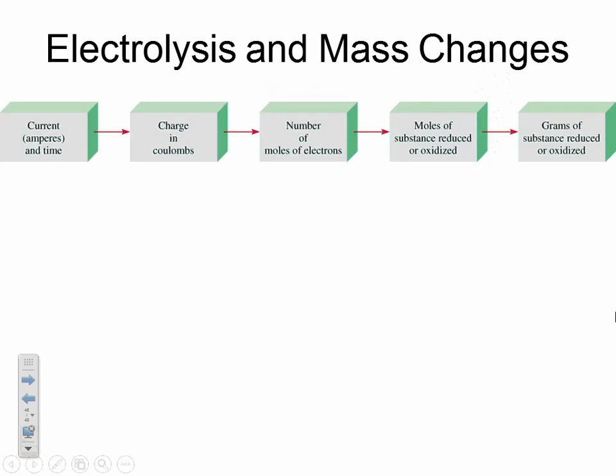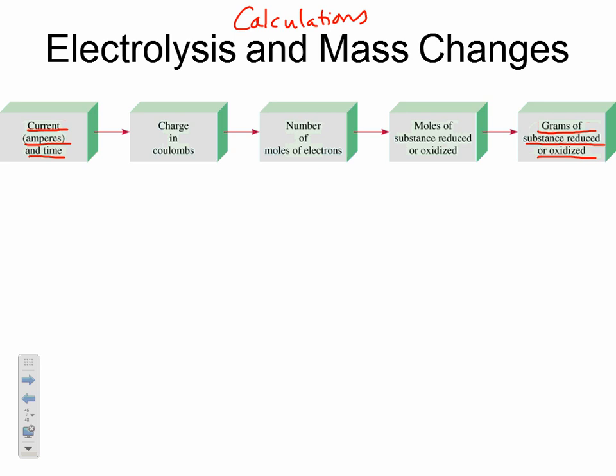Where we'll most commonly use electrolytic cells is in calculations. The calculations involve using current — measured in amps — and time, converting all the way into grams of something that was oxidized or reduced. This type of problem is actually nothing but dimensional analysis — literally just unit conversion.